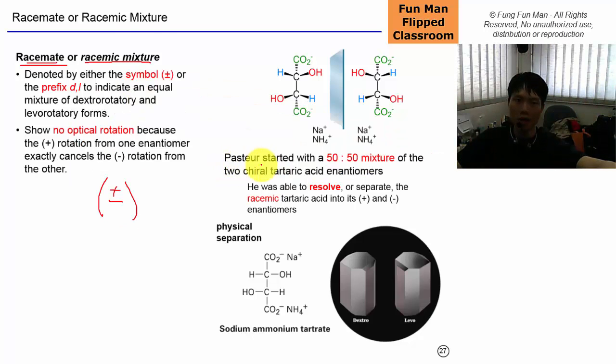Remember Louis Pasteur from France? So he began with a 50-50 mixture of the two chiral tartaric enantiomers and then after he did some chemical reactions, he was able to resolve the two different enantiomers by some physical separation.